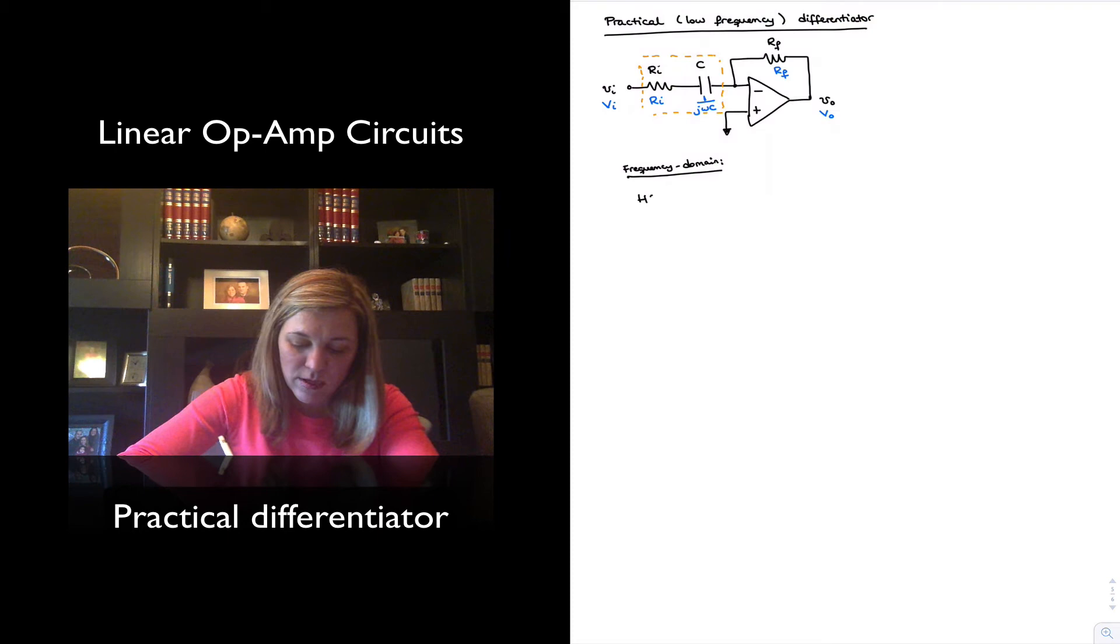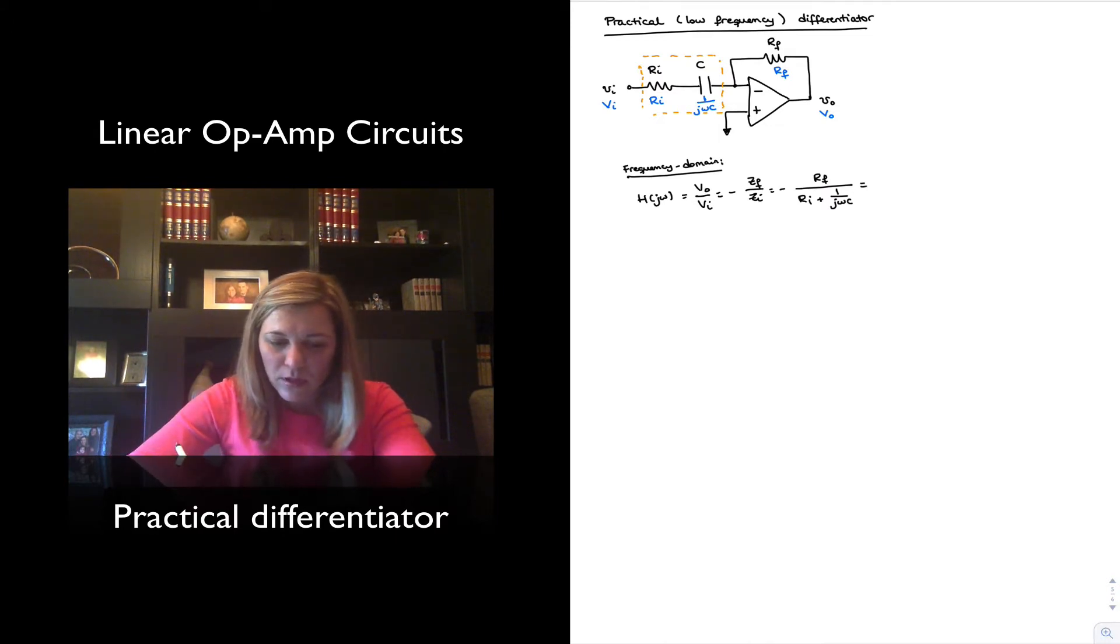I can write my transfer function, which is equal to phasor v out over phasor v in, will be equal to negative Zf over Zin, or negative Rf divided by Ri plus 1 over j omega c. I can divide numerator and denominator by Ri, and so I will have negative Rf over Ri divided by 1 plus 1 over j omega Ri times c.